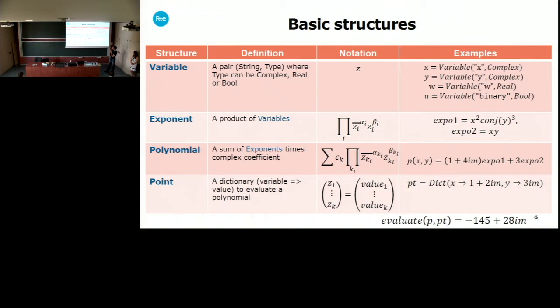Let's look more closely at what these types are. A variable is just a string and a type. The types can be either complex, real, boolean, or integer. To define a variable we have the syntax shown on the right column. From these variables we can define exponents. An exponent is just any product of variables, and we can define it with this syntax, using the times and power operators.